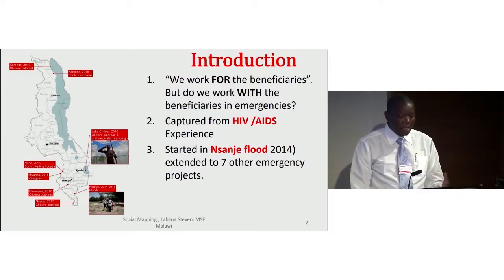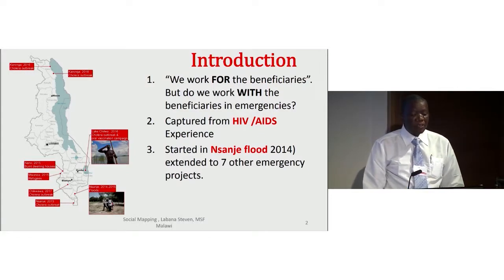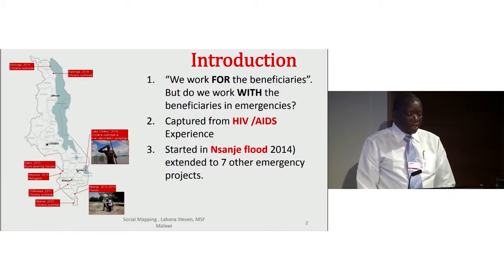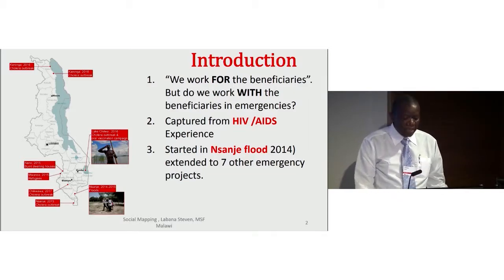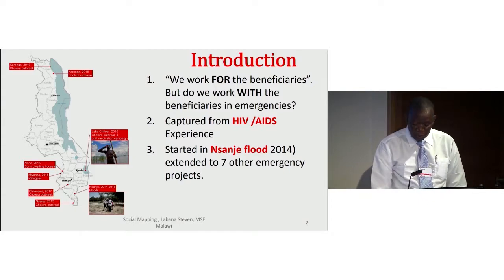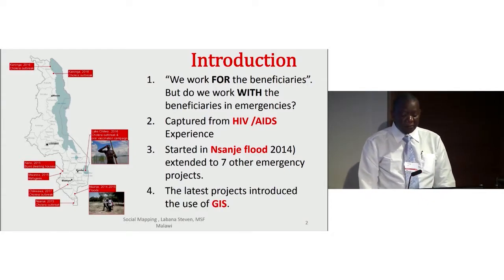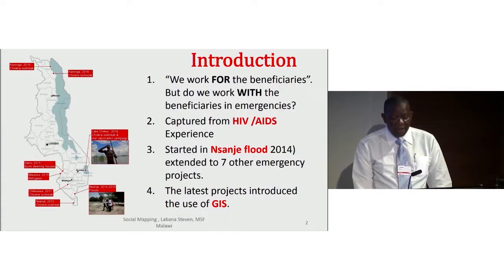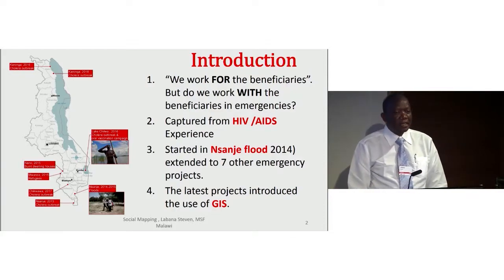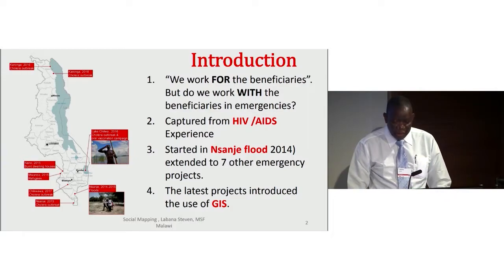We had cholera in general, and the cholera plus the oral vaccination campaign on Lake Chihua. Also, the displacement of people from the neighboring country. In both areas it was also successful. Most recently, we also introduced a geographical information system as a way of improving communication with external stakeholders.